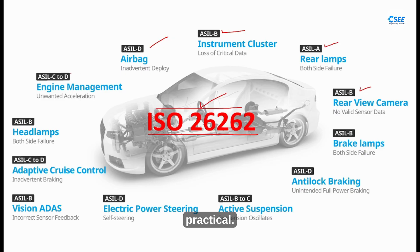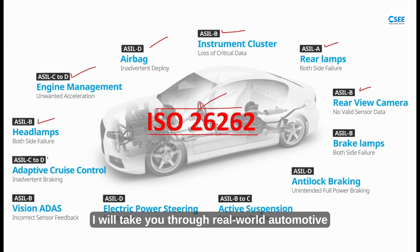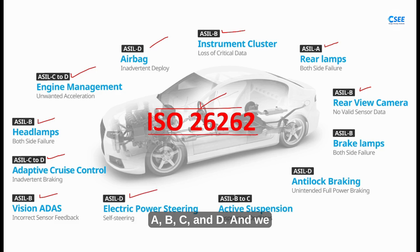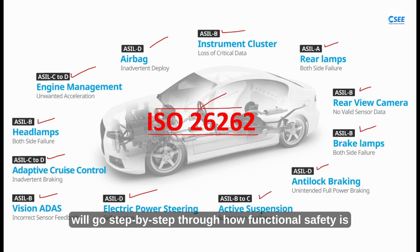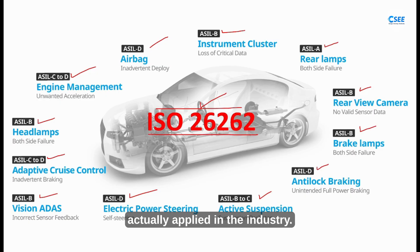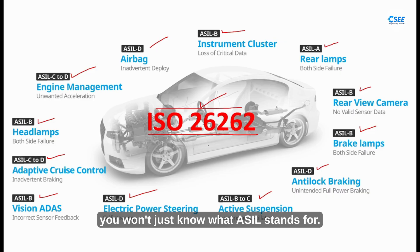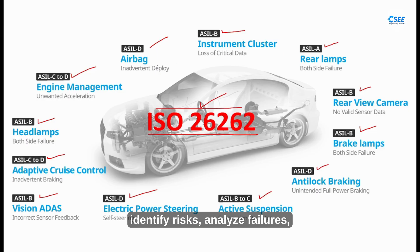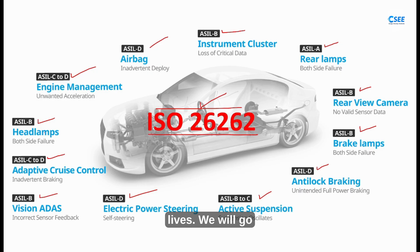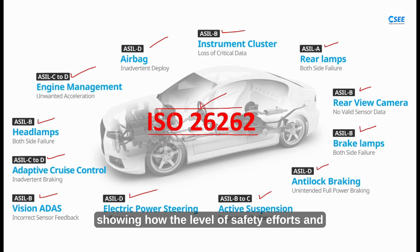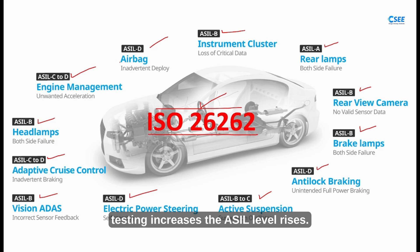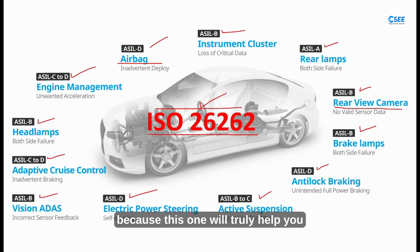Today we are going to make it completely practical. I will take you through real-world automotive examples that match each ASIL level — A, B, C and D — and go step by step through how functional safety is actually applied in the industry. By the end of this video, you will understand exactly how safety engineers identify risk, analyze failures, define safety goals and design systems that protect lives. We will go from a simple parking sensor to an airbag system, showing how the level of safety effort and testing increases as the ASIL level rises. So stay tuned till the end, because this one will truly help you see how safety shapes everything inside a modern vehicle.